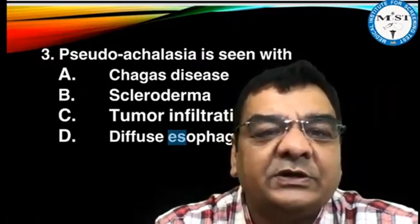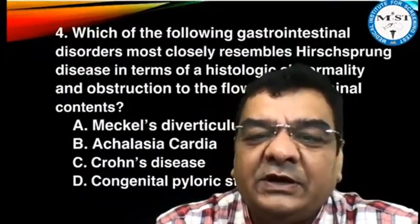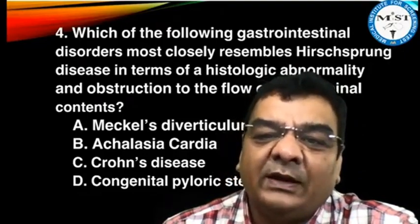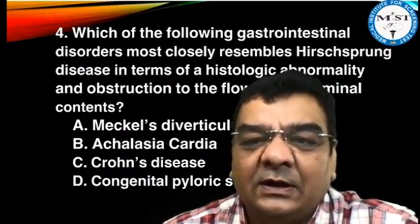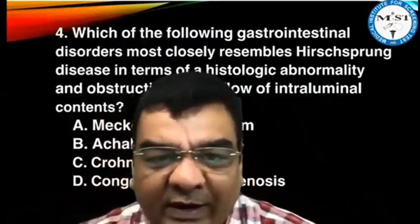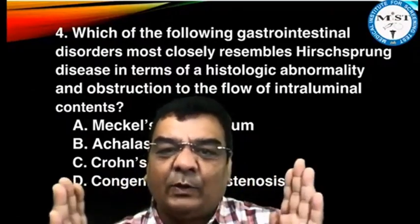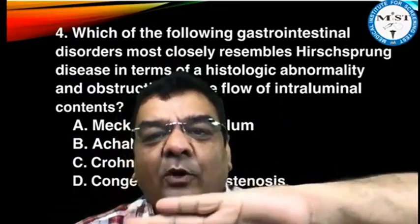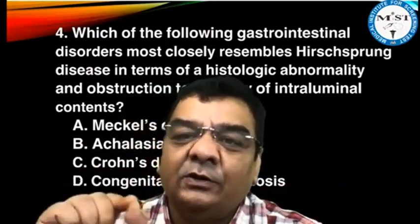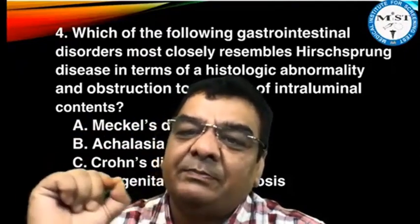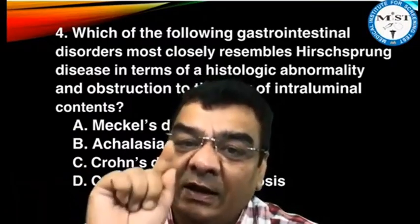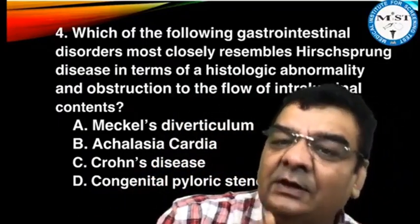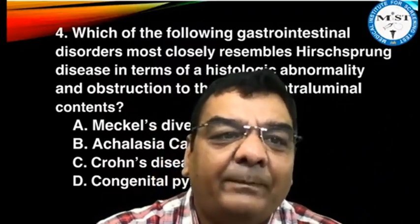Now let's have a look at another question: which of the following GI disorders most closely resembles Hirschsprung's disease in terms of histologic abnormality and obstruction to the flow of intraluminal contents? When the question is a little lengthy, don't read the options first. Read the complete question carefully. Now, what happens in Hirschsprung's disease?